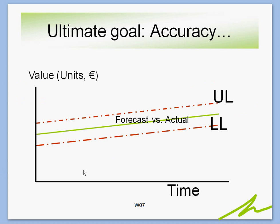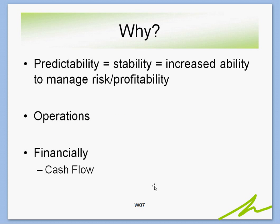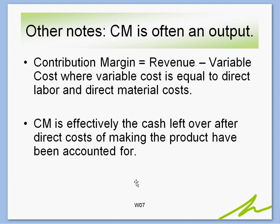Our ultimate goal is accuracy. One primary reason for forecasting, in addition to predicting future cash flows, is having the right staffing and resources in place — whether it's having enough inventory to convert into finished goods or enough people to apply labor to produce or deliver the service. You don't want to be constantly scrambling. The better you predict the future, the better you manage resources and realize the margins you're looking for. We're looking for predictability, stability, an increased ability to manage risk, and ultimately profitability — affecting both operations and financial cash flow.